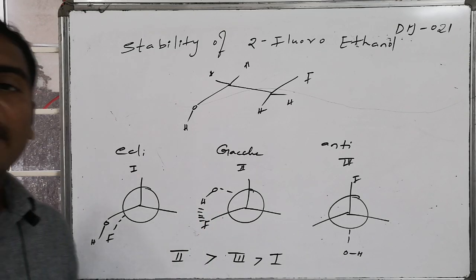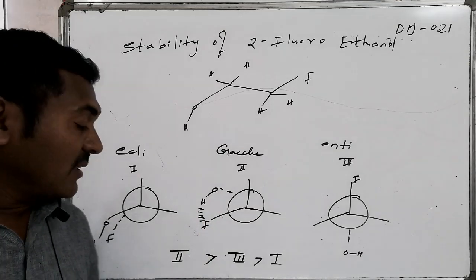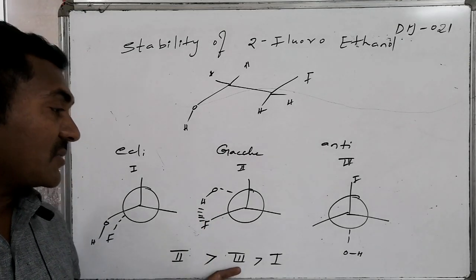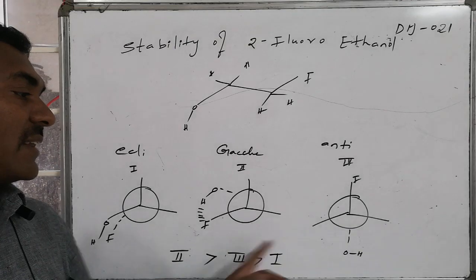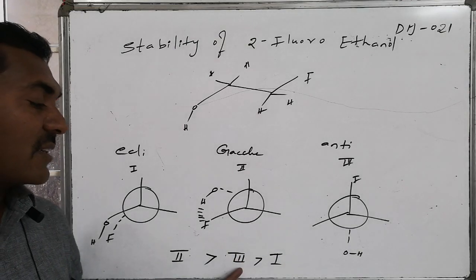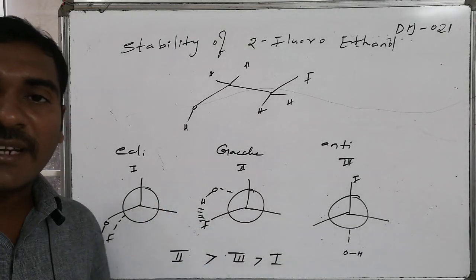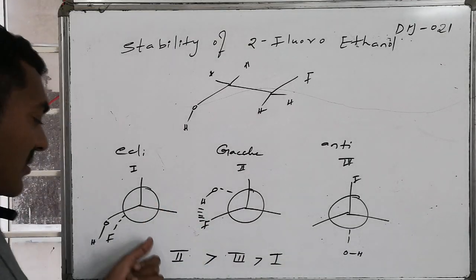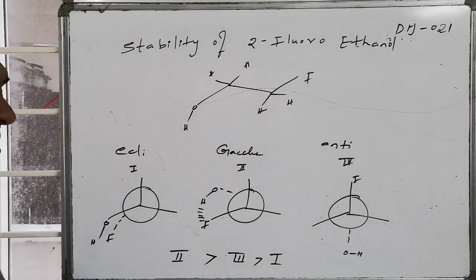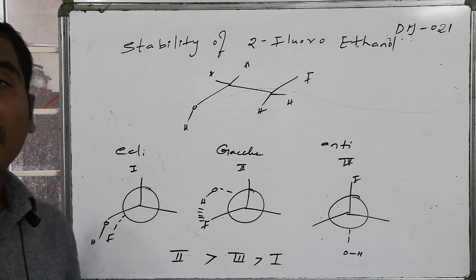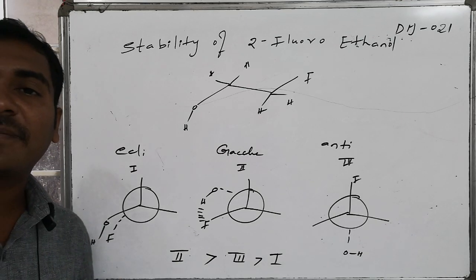The stability order for 2-fluoroethanol: gauche conformation is most stable due to intramolecular hydrogen bonding, followed by the anti-conformation, and then the eclipsed conformation, which is least stable because it is associated with torsional strain.